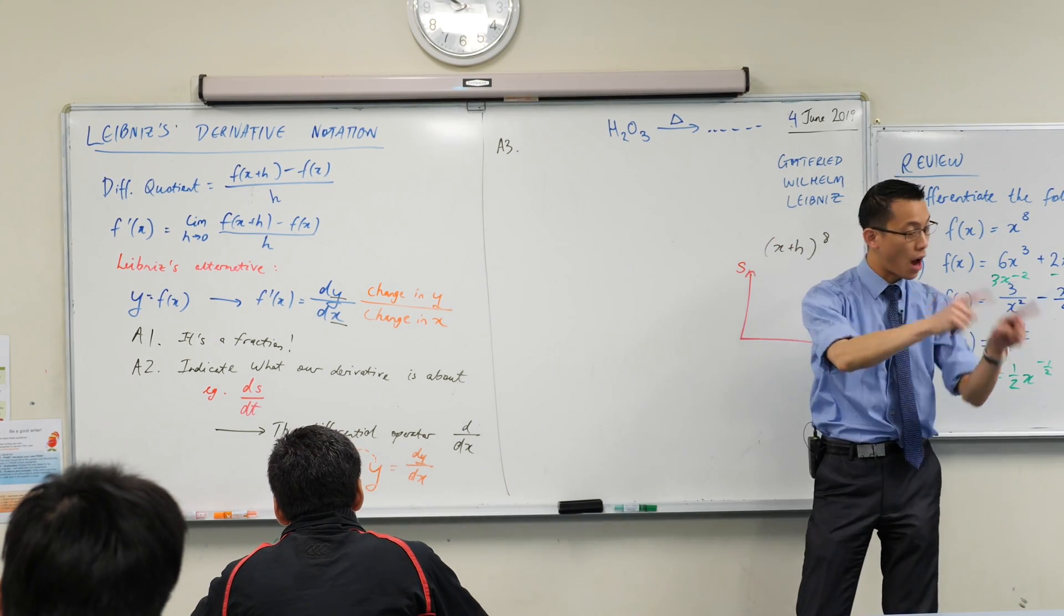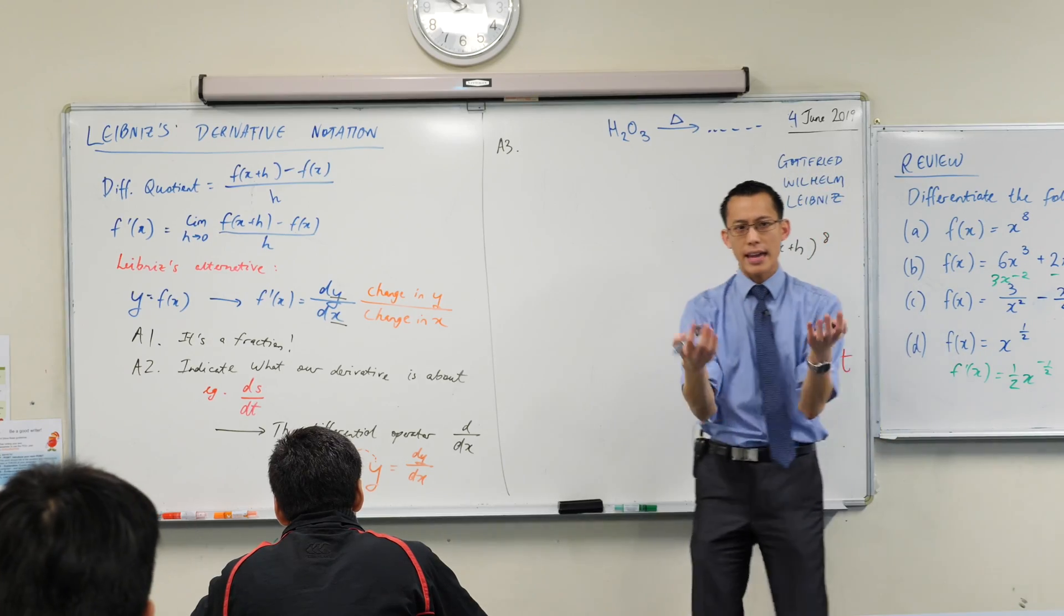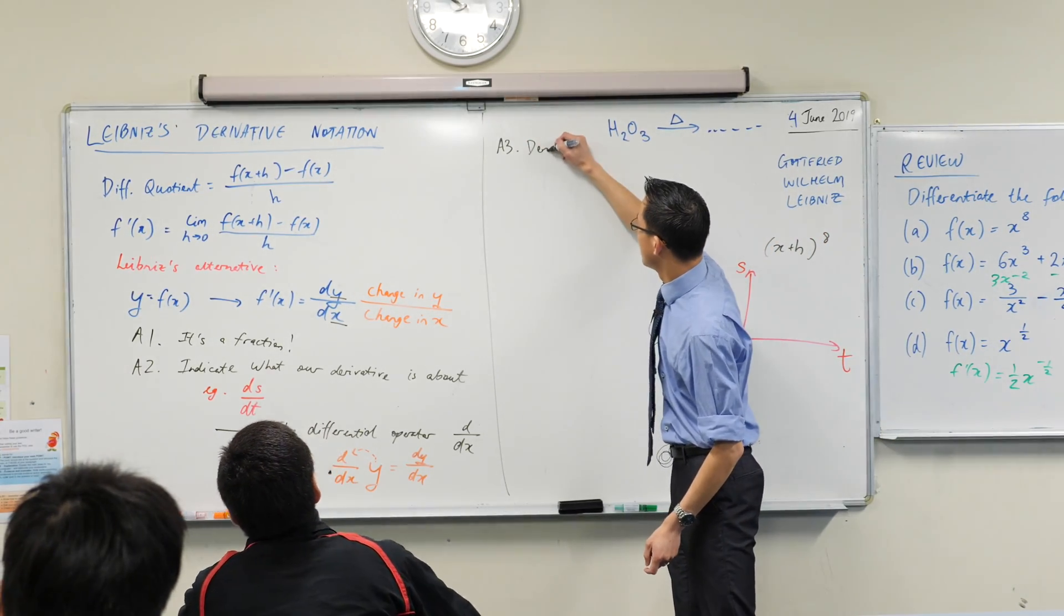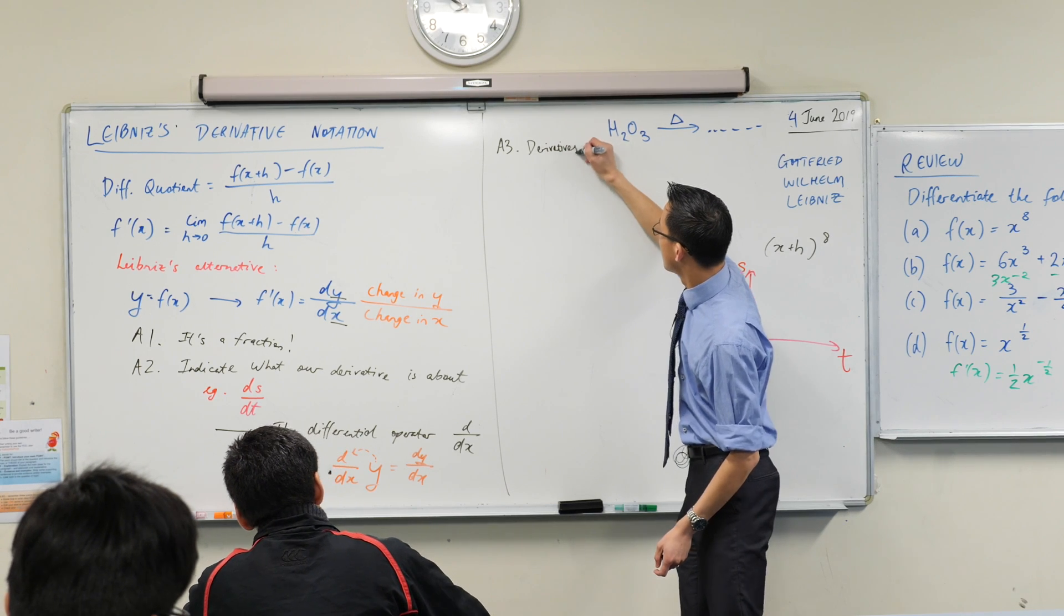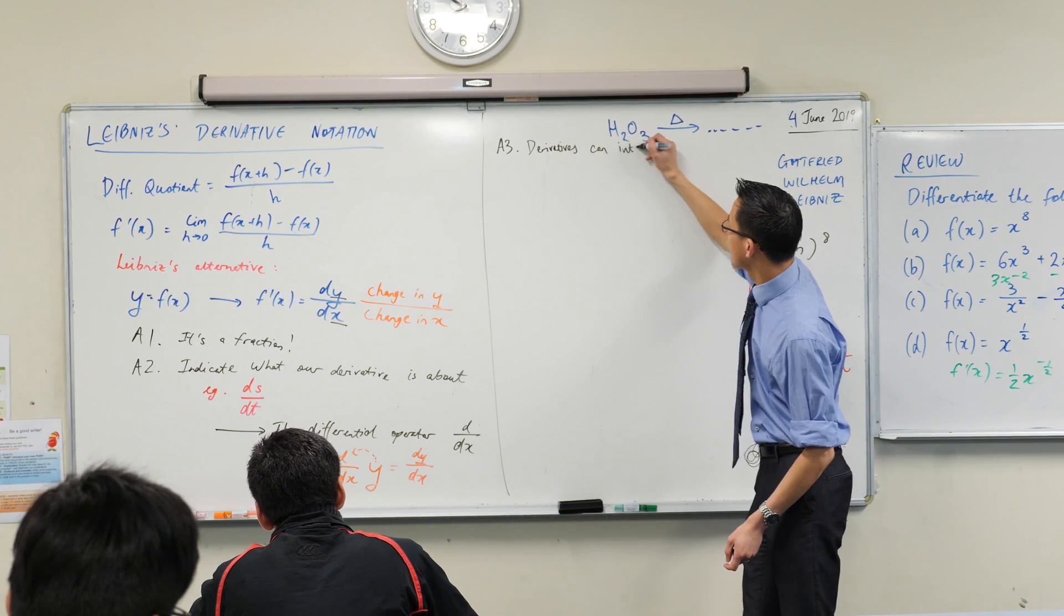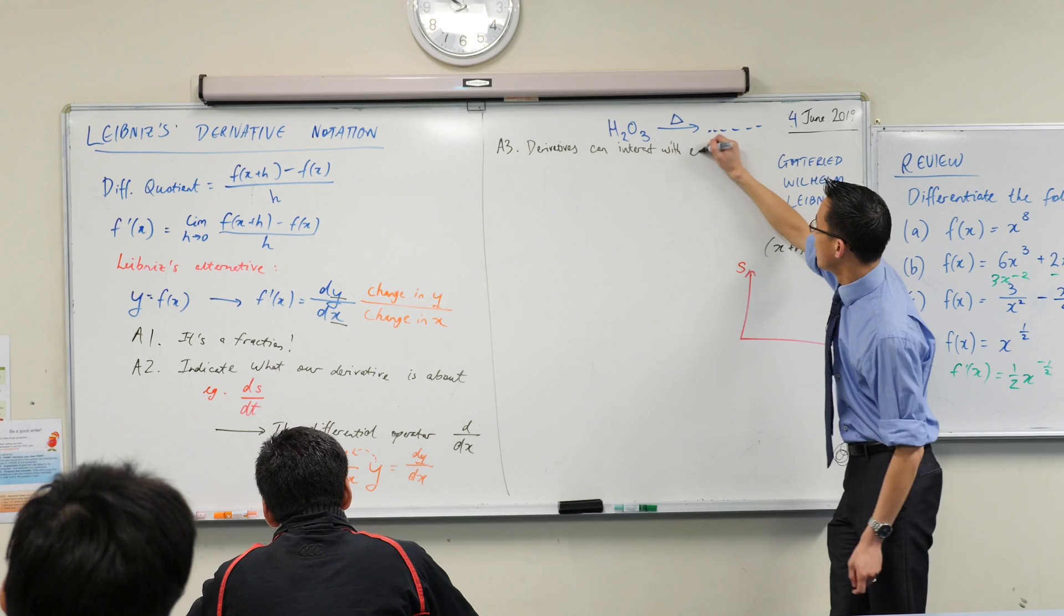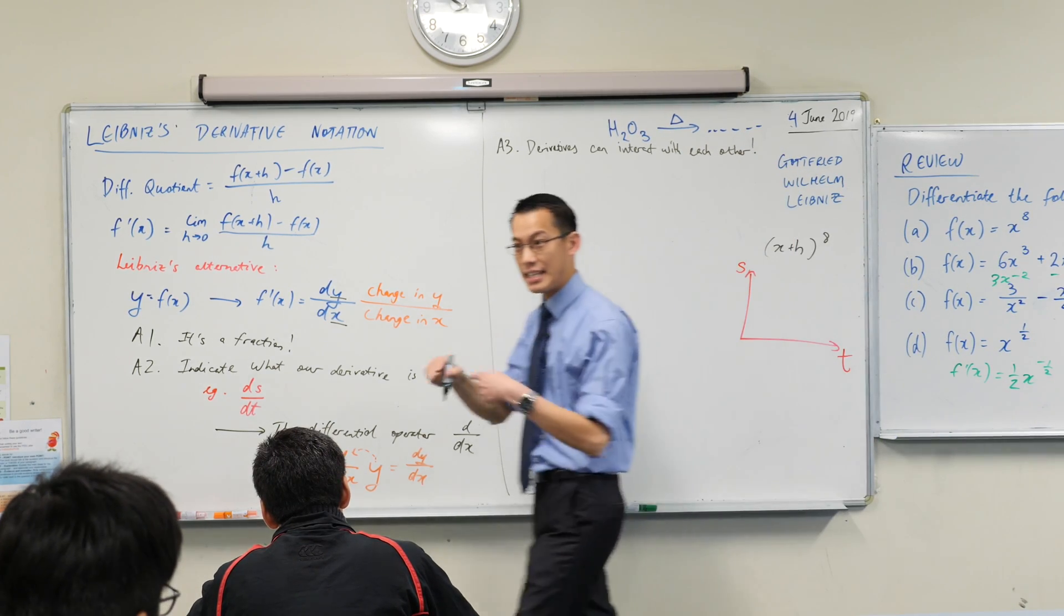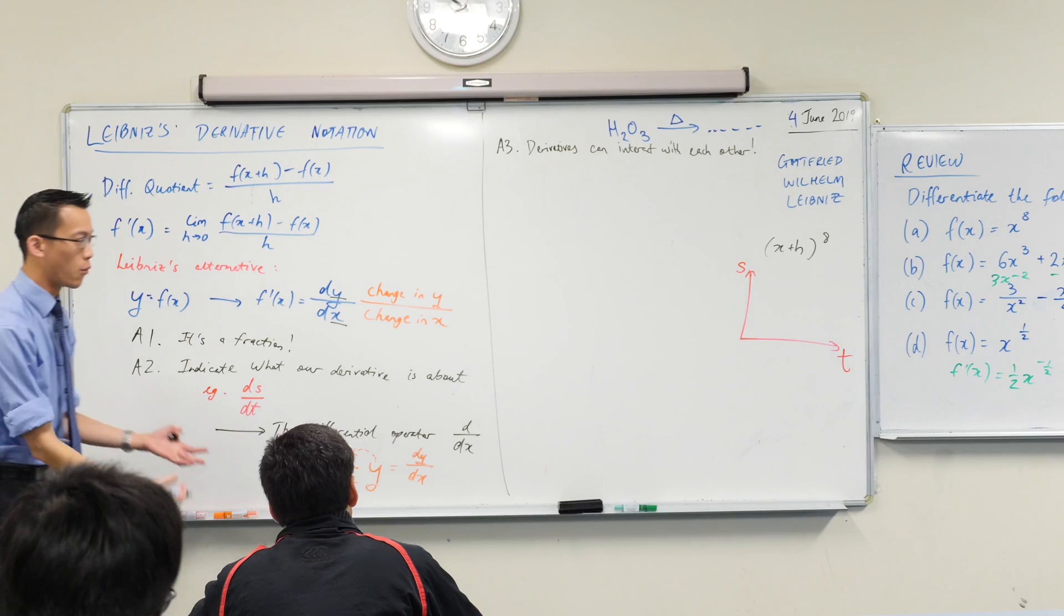It allows derivatives to interact with each other. Now, derivatives can interact with each other. Now, that's a bit vague right now because it's leaning into the next concept where we're going to learn. But I want you to know, like, why are we going to the effort of introducing new notation?